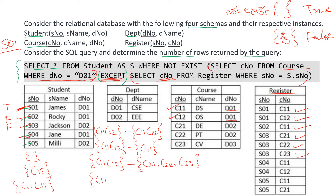Now moving on to student S04. We have C11, C12 minus the C numbers for S04 from the register table, which are C11 and C12. So C11, C12 minus C11, C12 gives us an empty set again. NOT EXISTS applied on an empty set returns true, so student S04 will be included in our answer.